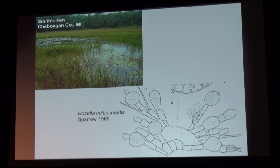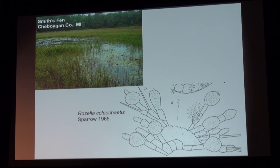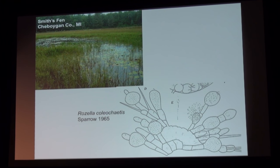The first place we turned to get these environmental dark matter fungi sequenced is a really lovely fen in northern Michigan. It's a site we thought really worth looking at because of one species — Rosella coleochitis, the only Rosella known on something other than water molds, growing on the green alga Colochytrium. It's only ever been found in this fen, seen only one time, and has a uniflagellate zoospore — we think it's probably among the dark matter. It's been my Moby Dick since coming to Michigan — constantly going up there trying to find it and never seeing it.